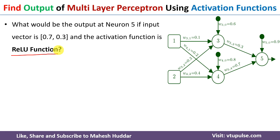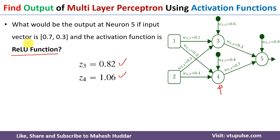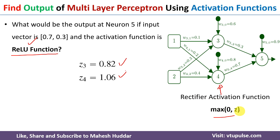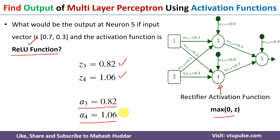Now the next activation function is ReLU. Again, we calculate the weighted sums at neurons 3 and 4 — these are 0.82 and 1.06, the same as before. We apply the ReLU activation function, which is defined as max(0, z). For neuron 3: max(0, 0.82) = 0.82. For neuron 4: max(0, 1.06) = 1.06. So the outputs at neurons 3 and 4 are 0.82 and 1.06 respectively.